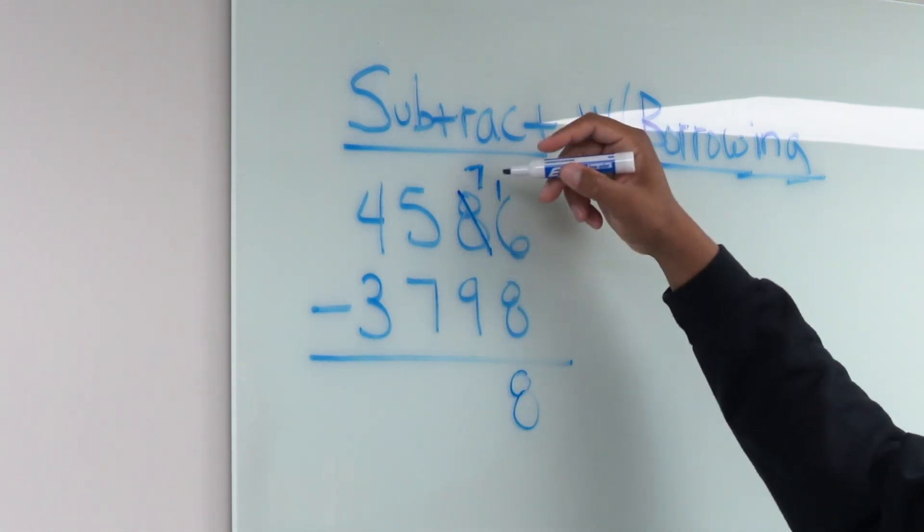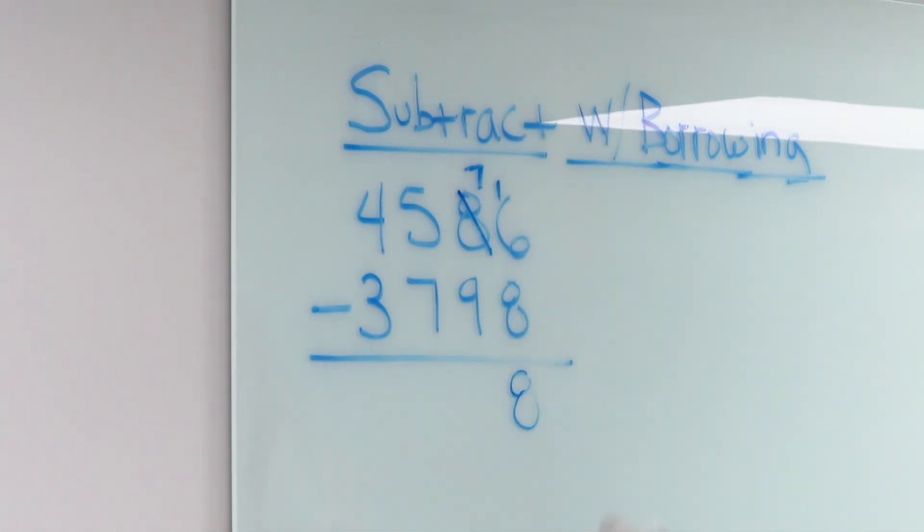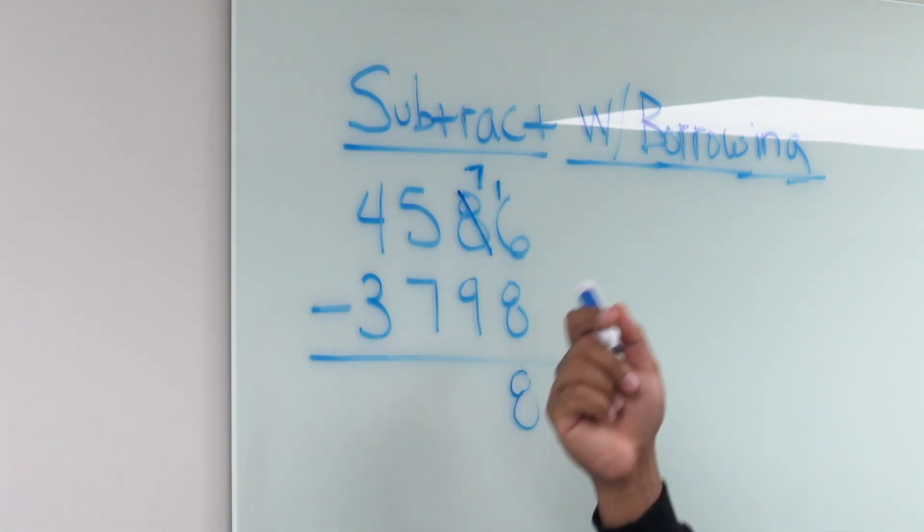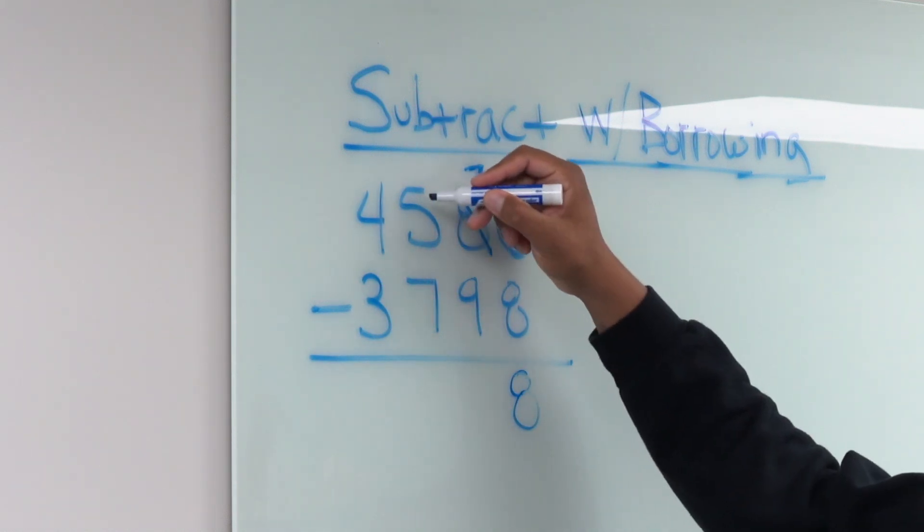Now we're going to do the same thing. Now we're going to attempt to subtract in the tens place but now we run into the same problem. We have a 7 on top and a 9 on the bottom. So now we don't want to have that because that's going to give us a negative. We want to borrow, go to the hundreds place.